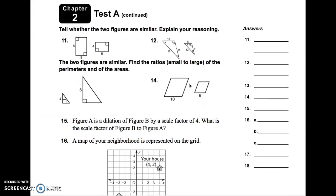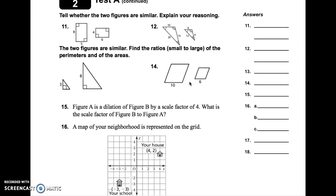Directions for 11 and 12 just simply say, tell whether the two figures are similar and explain your reasoning. So in order to know for a fact if two shapes are similar, you have to set up a proportion and then cross multiply. So you may want to make that note right there, kind of maybe by the directions.